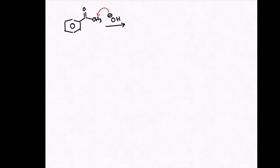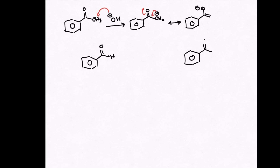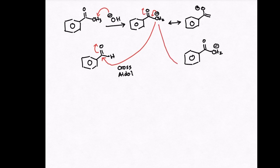The enolate is formed from the reaction between the alpha-hydrogen of acetophenone and the base catalyst. The enolate, acting as a nucleophile, will attack the carbonyl on the benzaldehyde or the enolate itself. The enolate that attacks the benzaldehyde is called a cross-aldol, while the enolate that attacks itself is called a self-aldol.